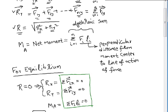Where L1, L2, L3, and so on are perpendicular distances from the moment center. Let the moment center be a point A. So L1 is the perpendicular distance from point A to force F1, L2 is the perpendicular distance from point A to force F2, and so on.